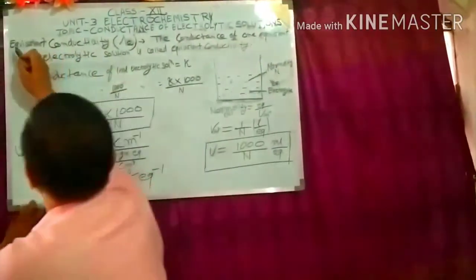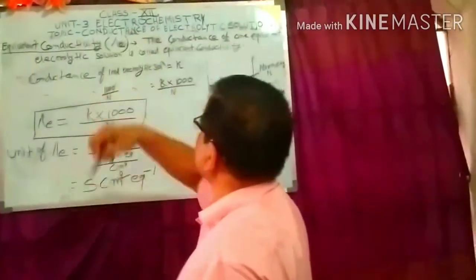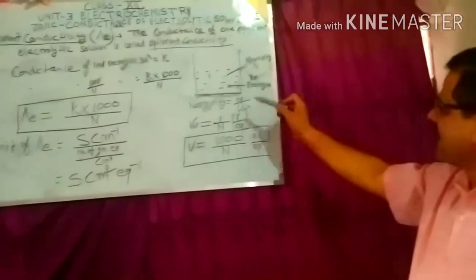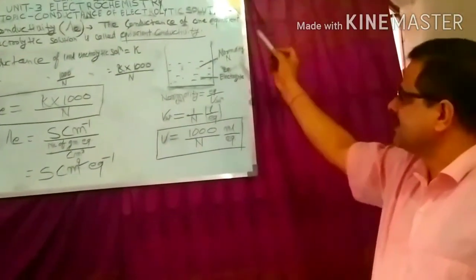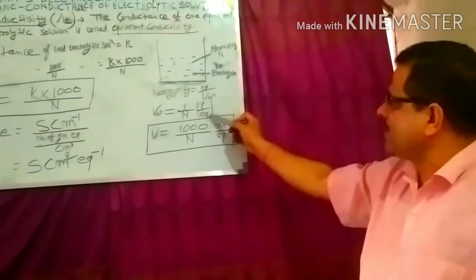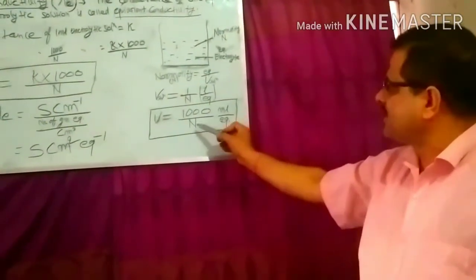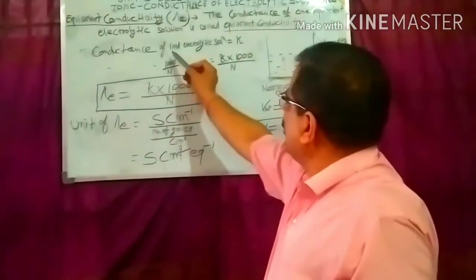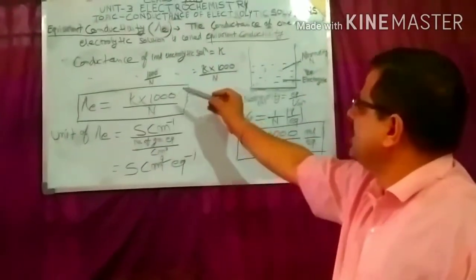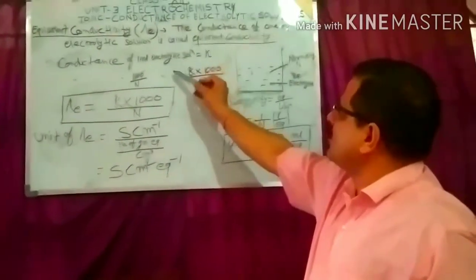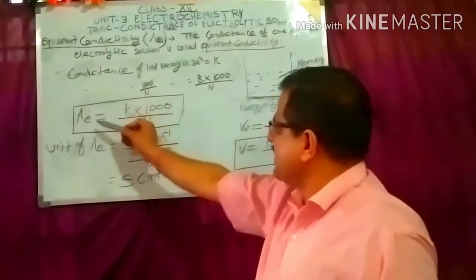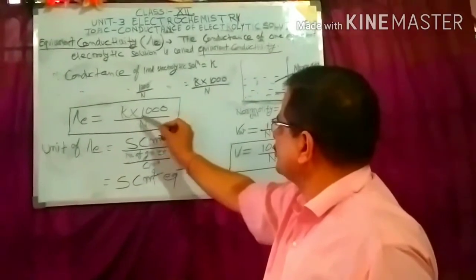Equivalent conductivity is denoted by λE. The conductance of one equivalent of electrolytic solution is called equivalent conductivity. Consider an electrolytic solution of normality N. Normality equals equivalents per unit volume, so volume = 1000/N mL per equivalent. Since conductance of 1 cm³ is κ, conductance of 1000/N cm³ is κ × 1000/N. Therefore, equivalent conductivity λE = κ × 1000/N, where N is the normality of the solution.